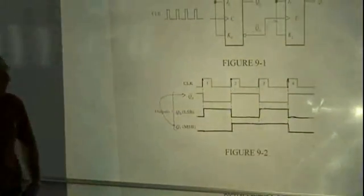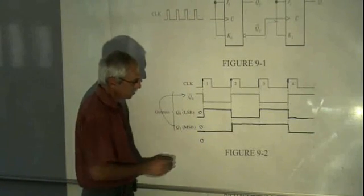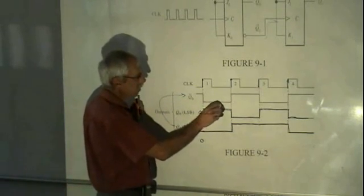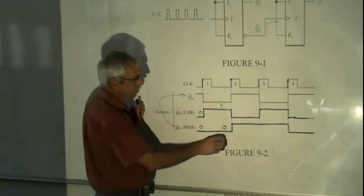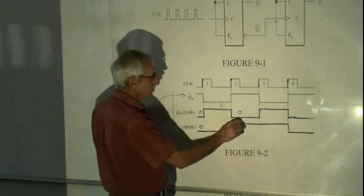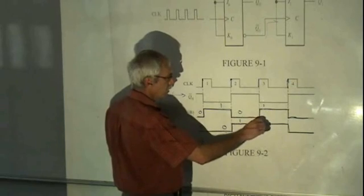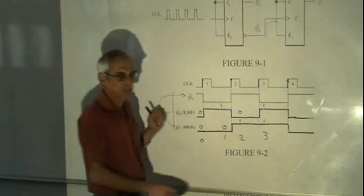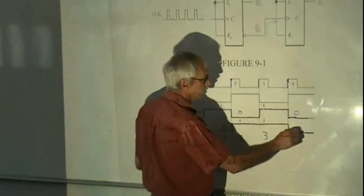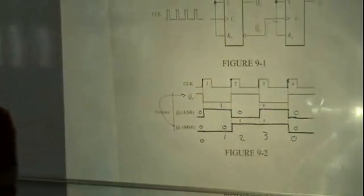And let's see if it's correct. We started off with 0, 0, so that gives me a decimal value of 0. Then we've got 1, 0, that's 1, and what do we have here? 0, 1, which is 2. Then we have 1, 1, which is 3. And then, after that, we expect the counter to go back to 0 again, and it does go back to 0 again.